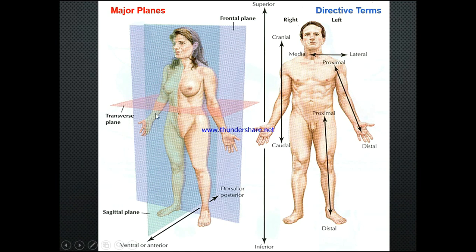Let's look at some of the major planes. We have the transverse plane shown here in light pink. We have the sagittal plane, transecting the body down the middle. We can break these planes up into ventral or anterior, and dorsal or posterior — dorsal is the posterior aspect, ventral is the anterior aspect.